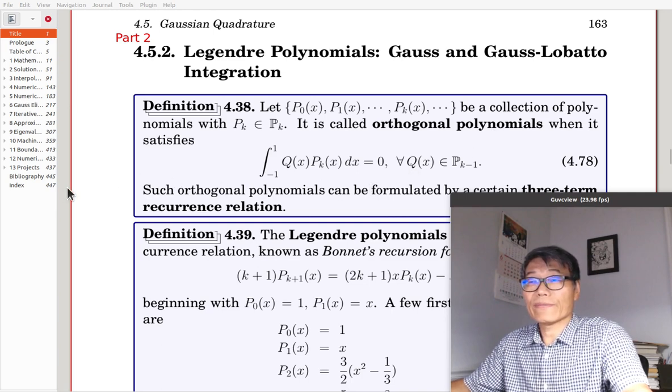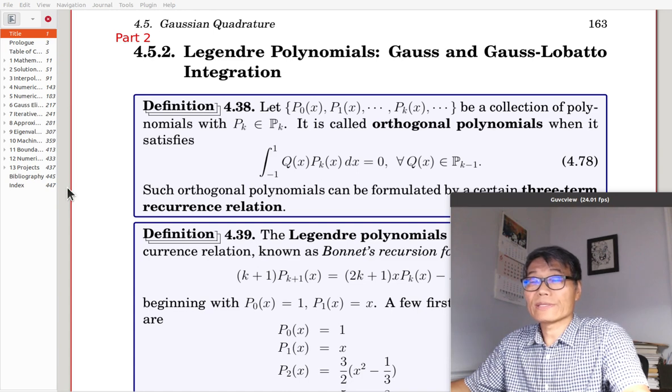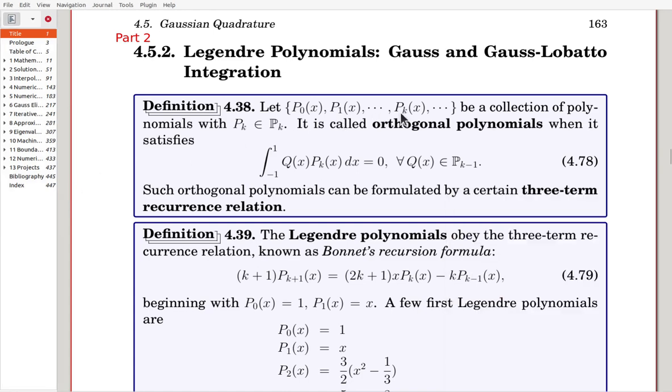Here we begin with a definition of orthogonal polynomials. P0, P1, P2, P3, and so on, is a collection of polynomials with Pk having degree k. The set of polynomials is called orthogonal polynomials when it satisfies this equation. Pk is orthogonal to Q. Q is an arbitrary choice from k-1 polynomial space. So if you choose two different members from this collection, then they are orthogonal. The product has integral 0.